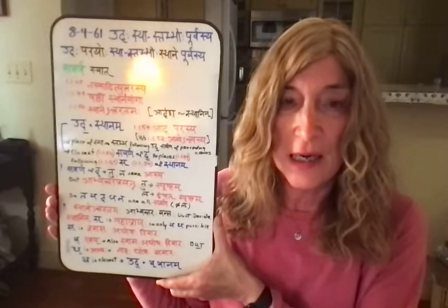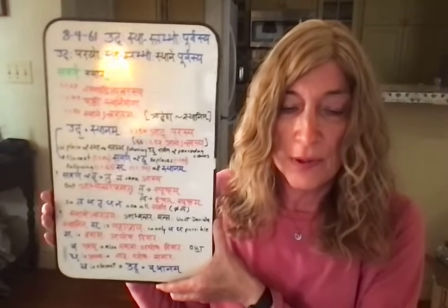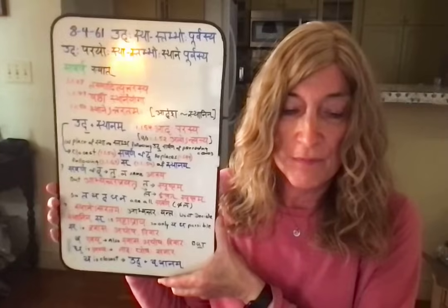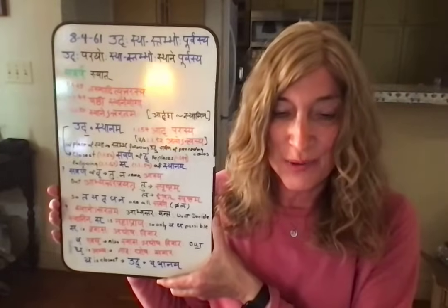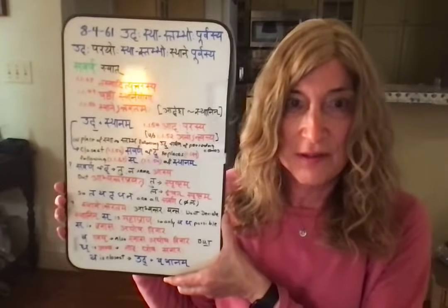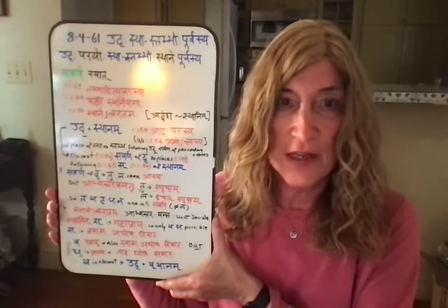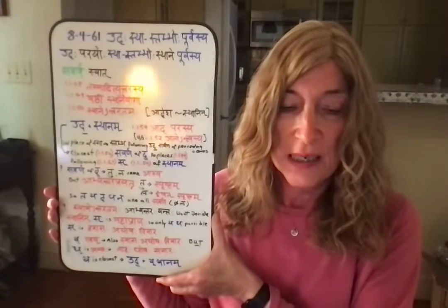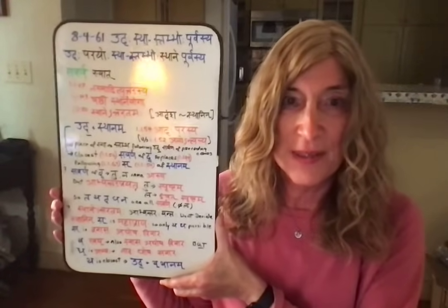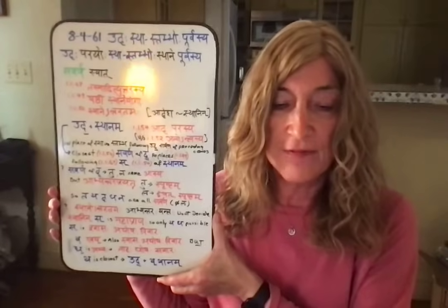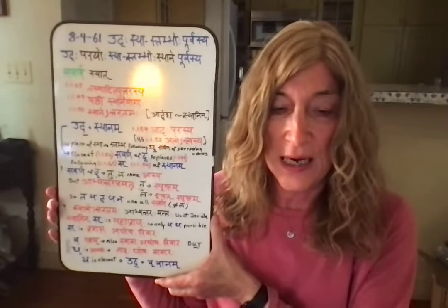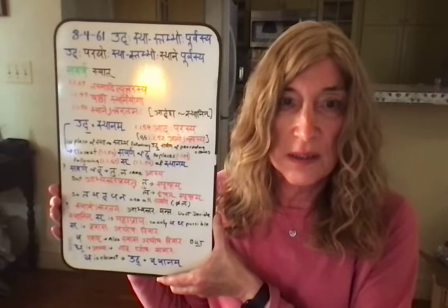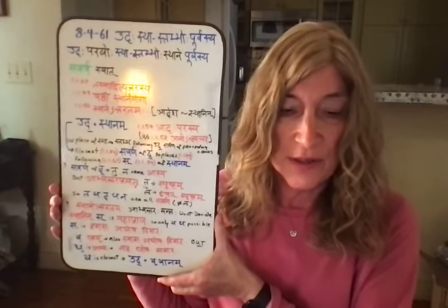So the first of stha or of stambhoḥ is si. When stha follows ut, in place of the si of stha following ut, the savarṇa of the preceding — namely da — shall come. The savarṇa of da shall come in place of si.